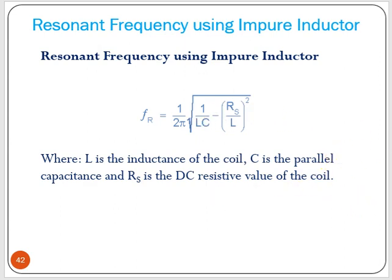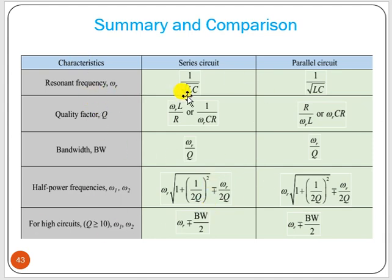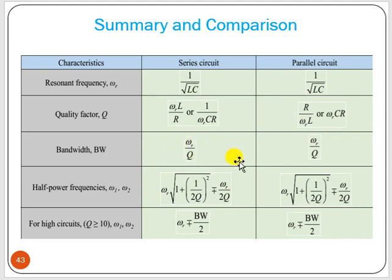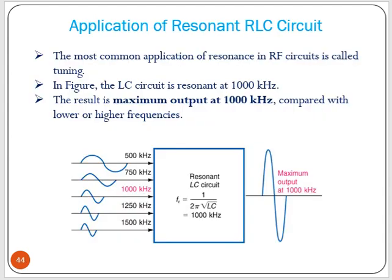Comparing series and parallel resonance: resonant frequency is 1/(2π√LC) for both ideal cases. Q factor for series is XL/R = 1/(ω₀CR) = XC/R; for parallel it is R/XL or R/XC. Bandwidth equals resonant frequency divided by Q for both. Half-power frequencies ω₁ and ω₂ are found using ω_r ± BW/2 in both cases, though the formulas for ω₁ and ω₂ differ between series and parallel.